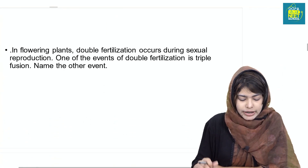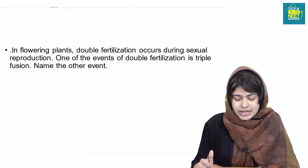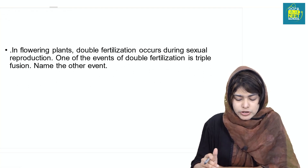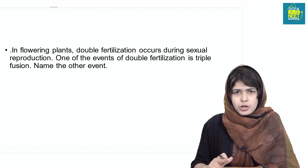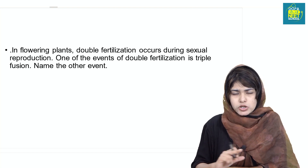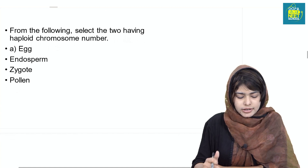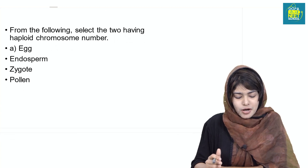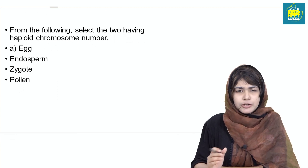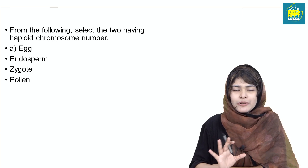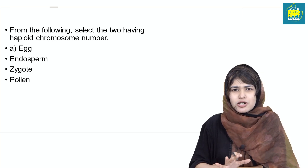In flowering plants, double fertilization occurs during sexual reproduction. One of the events of double fertilization is triple fusion. Name the other event. From the following, select the two structures that have a haploid chromosome number. If you have double fertilization, one more question follows.